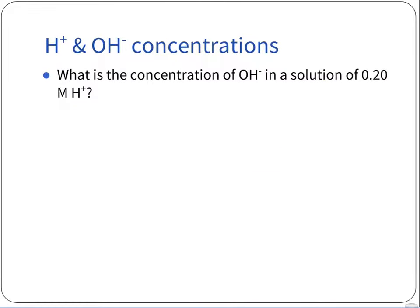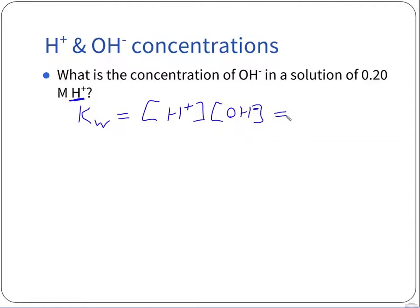Let's try another one. What's the concentration of hydroxide in a solution of 0.020 molar H⁺? We know KW still holds — the ion product constant is still equal to the concentration of hydronium, or H⁺ since they're always equal and interchangeable mathematically. At 25 degrees Celsius that equals 1×10⁻¹⁴.